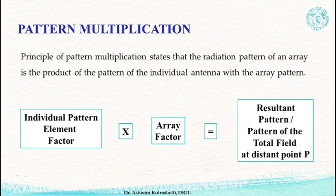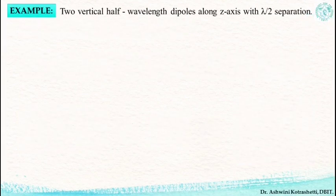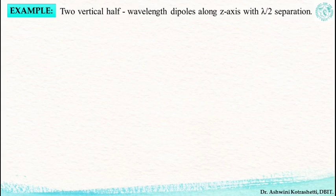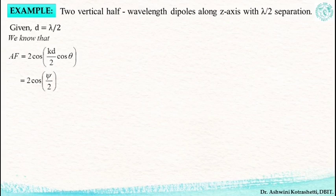For a single element array, the array factor will be equal to 1. Let us take an example of two vertical half-wavelength dipoles placed along the z-axis with a distance of separation of lambda by 2, so d equals lambda by 2. We need to find the array factor, which from our derivation is 2 cos(psi/2). To find psi, we substitute for d and get psi equal to pi cos(theta). So the array factor is 2 cos(pi/2 cos(theta)).